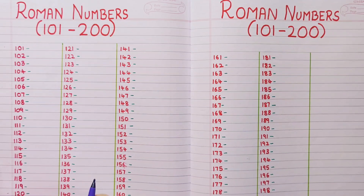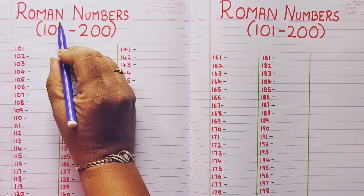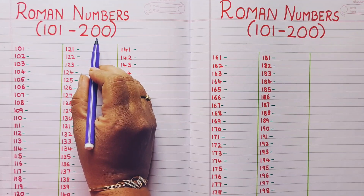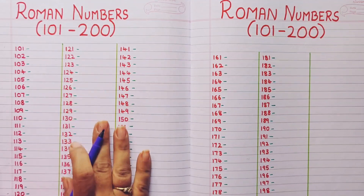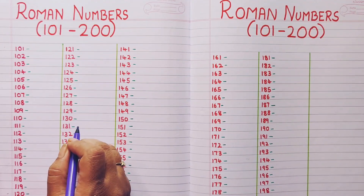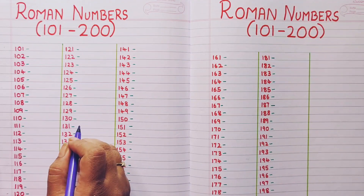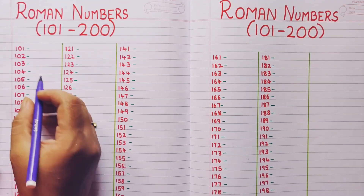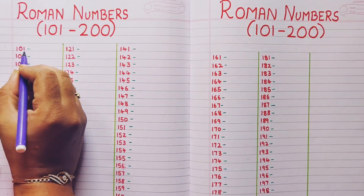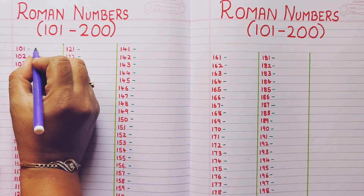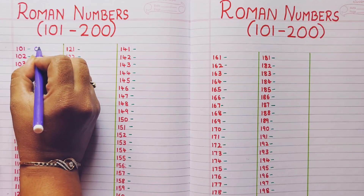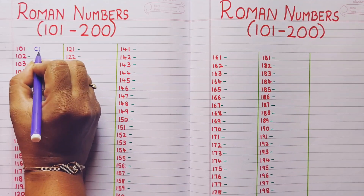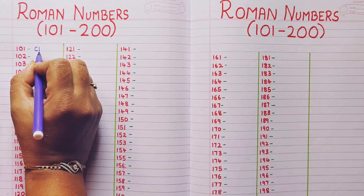Hi everyone, today we are going to learn the writing of Roman numbers from 101 to 200. Now we all know that 100 is represented by C. So we will start the writing from 101. We are going to write 101 as C and I. C represents 100 and I represents 1.